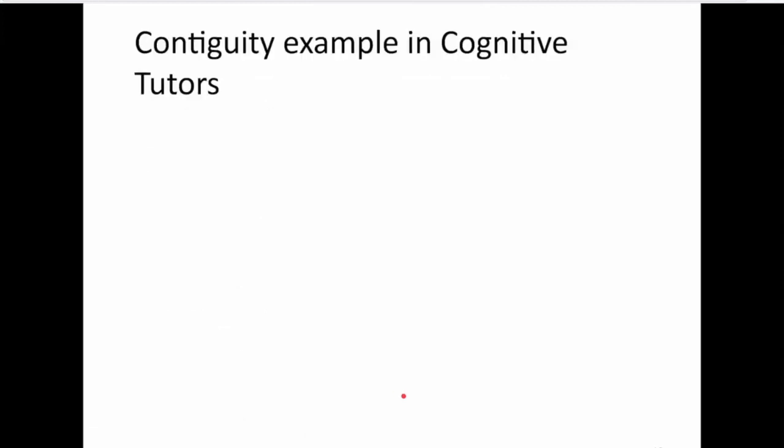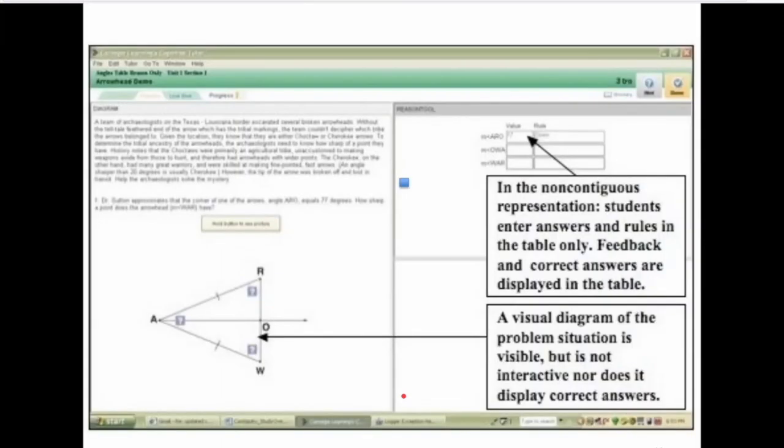Here's an example of contiguity in some experiments with cognitive tutors. So in the original interface here where students were given some, hard to see, but information about this geometric figure, so some of these values are given. They're also told these sides are equal, so it's an isosceles triangle. They fill in the values. This says given here, so the first one angle ARD is given. And so they're going to enter that given value.